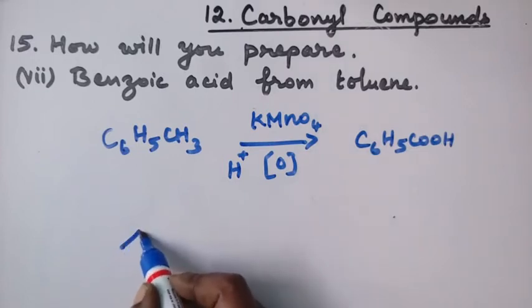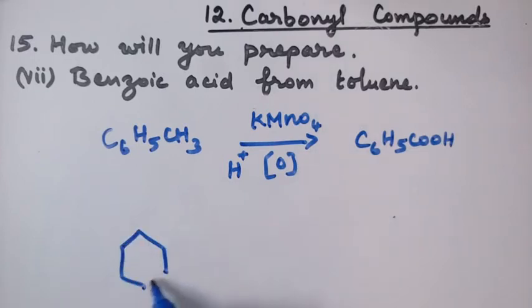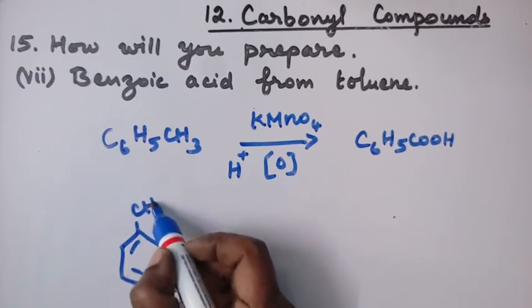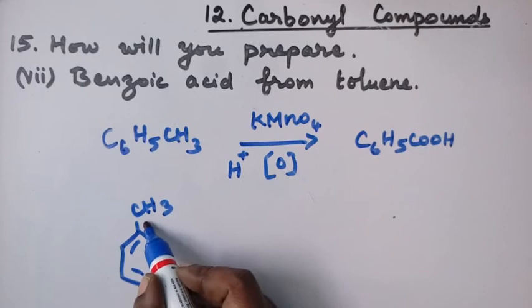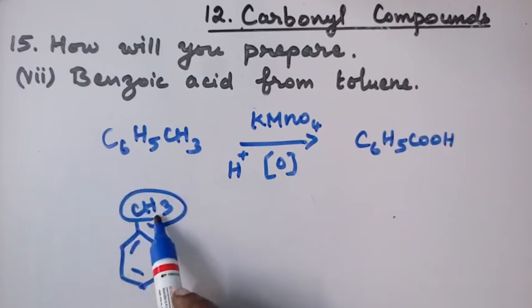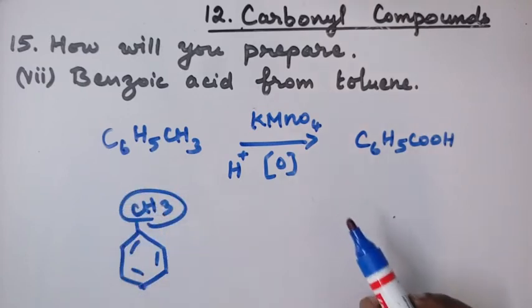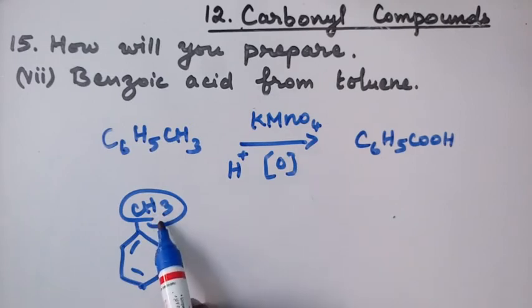So when we draw as a ring for this toluene, this is benzene ring and CH3, this group is the side chain. The whole side chain is converted to an acid whatever may be the group.